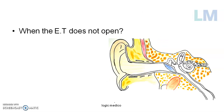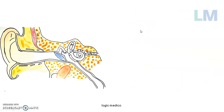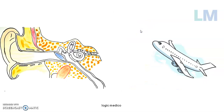When the eustachian tube does not open properly, that is where the disease called eustachian tube dysfunction comes in — it is a disordered function. To understand it better, consider the example of taking off in a flight. When you are taking off from the ground and flying into the air, what happens to the atmospheric pressure at a higher altitude?